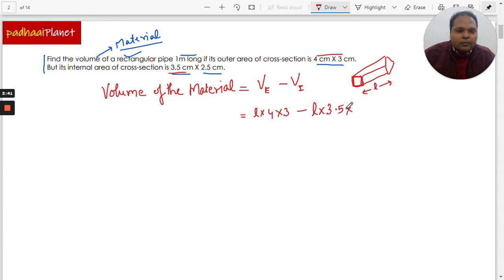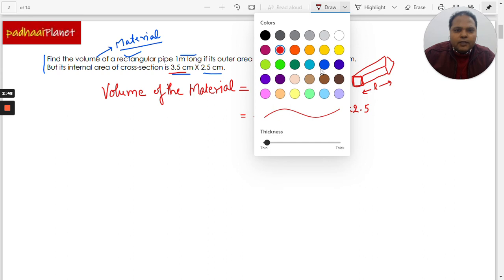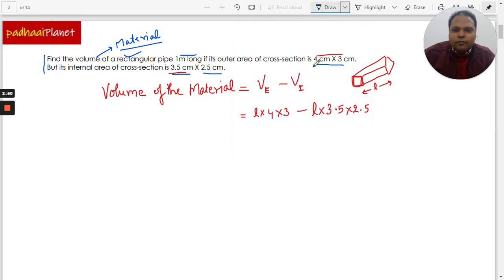Let's simplify it. The value of L is already given, that is 1 meter. When we convert, L is equal to 1 meter, but these two things are in centimeters, so let's convert this also into centimeters, and it will be 100 centimeters.